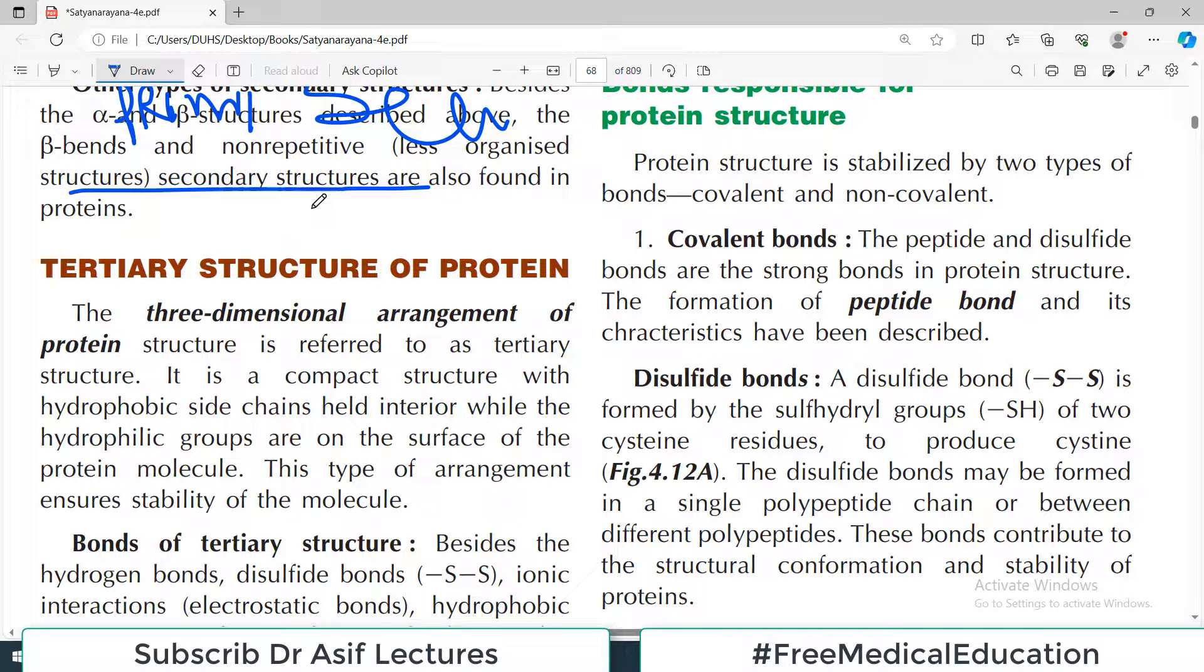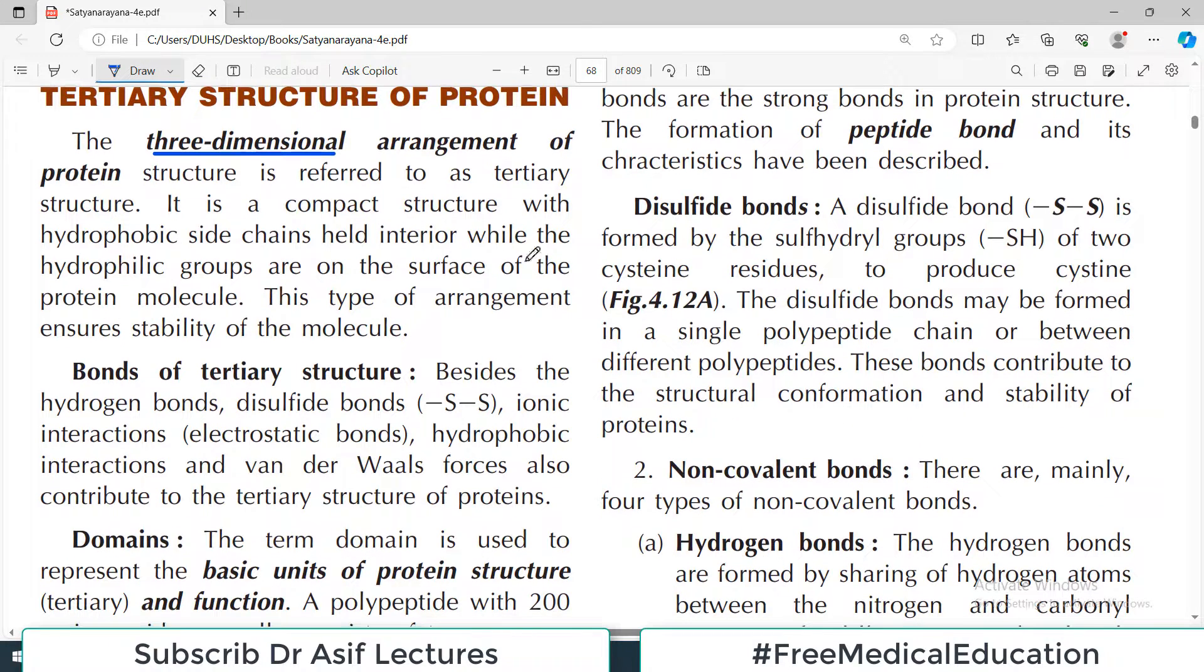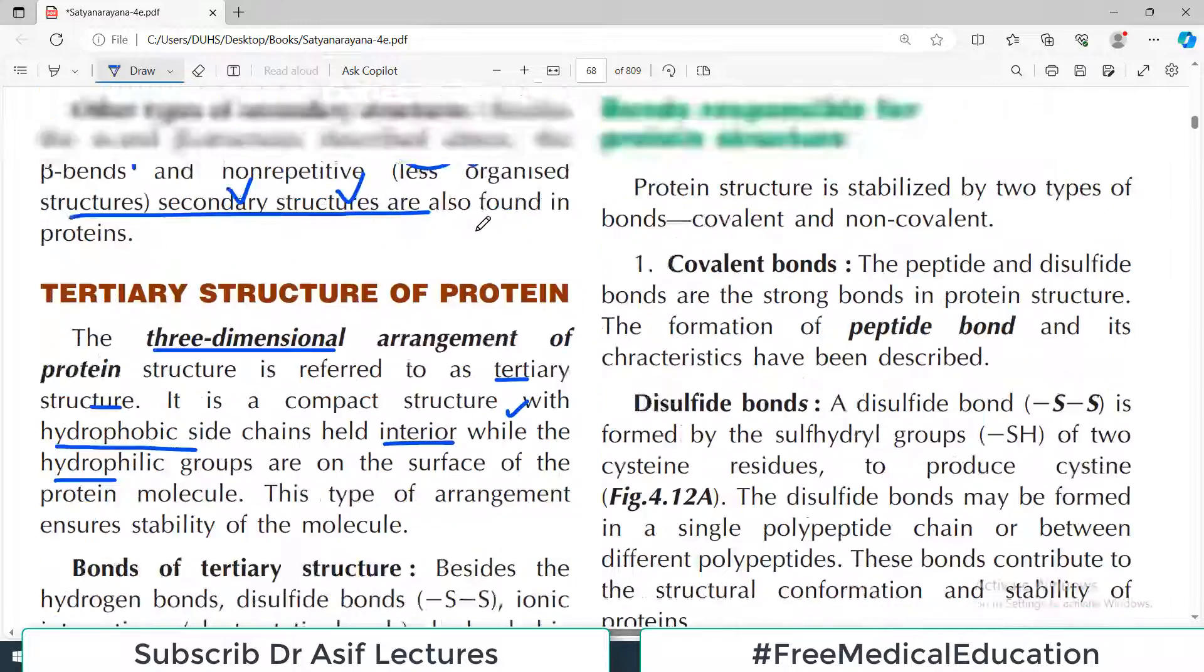Now when these structures, after primary and secondary, undergo further remodeling, they assume a three-dimensional structure. This three-dimensional arrangement is known as tertiary structure. It is a compact structure with hydrophobic sides of the protein chain held toward the interior of the fold, and the hydrophilic sides towards the exterior. That should make perfect sense.